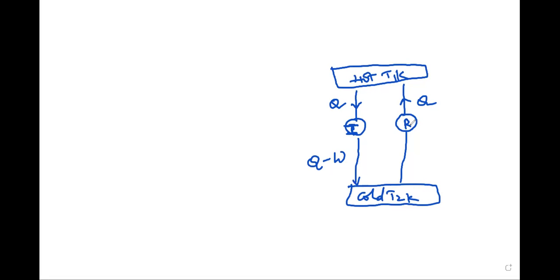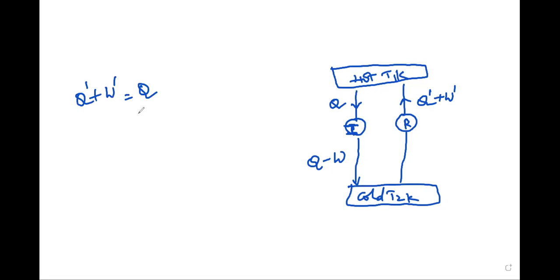Engine R, running in reverse, absorbs heat Q' from the sink. A certain amount of work W' is done on the working substance, and it transfers heat Q' plus W' to the source. So the heat that I receives from the source equals what R returns to the source: Q' plus W' equals Q, which gives W' equals Q minus Q'.